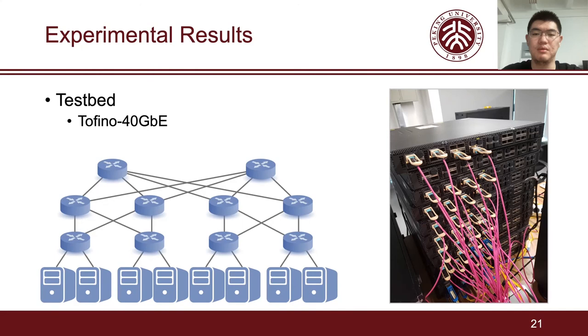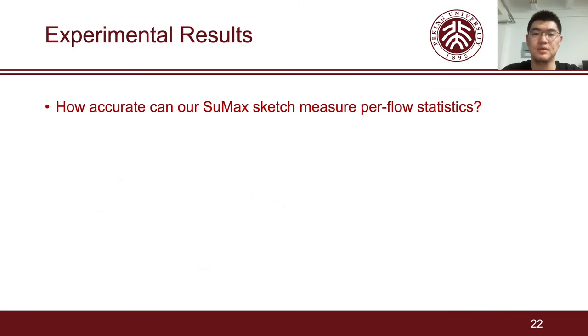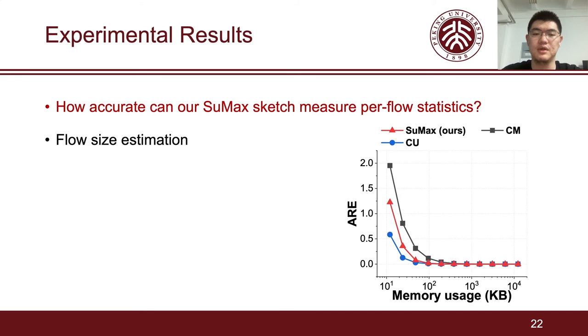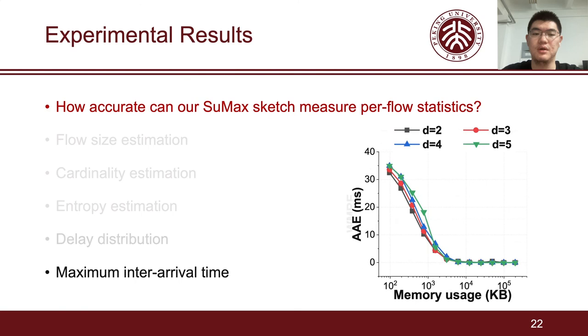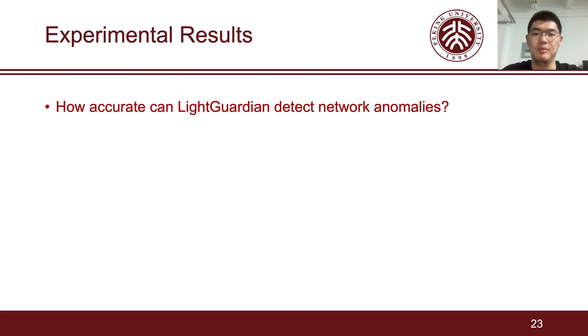Finally, let's take a look at our experimental results. We have fully implemented our Light Guardian prototype on a testbed with 10 Tofino switches and 8 servers. Our experiments focus on the following four issues. The first issue is how accurate can our SumMax sketch measure per flow statistics. As expected, the accuracy of SumMax sketch is higher than CM and close to CU. In most tasks, the performance of SumMax is better than the well-known versatile sketch, UnivMon.